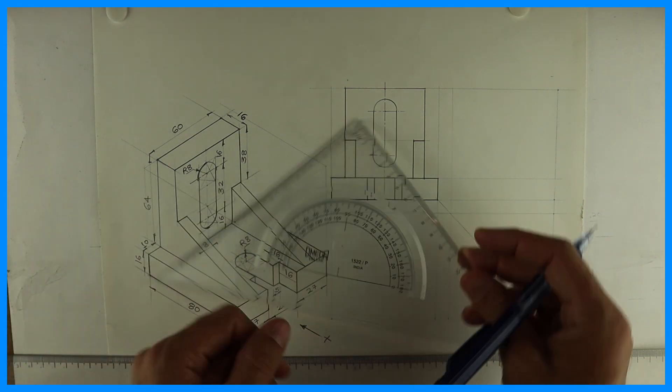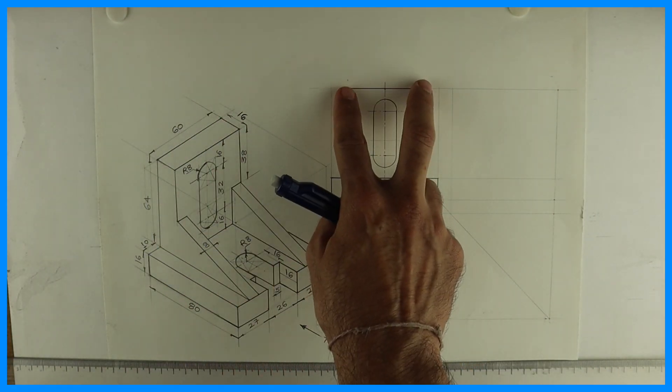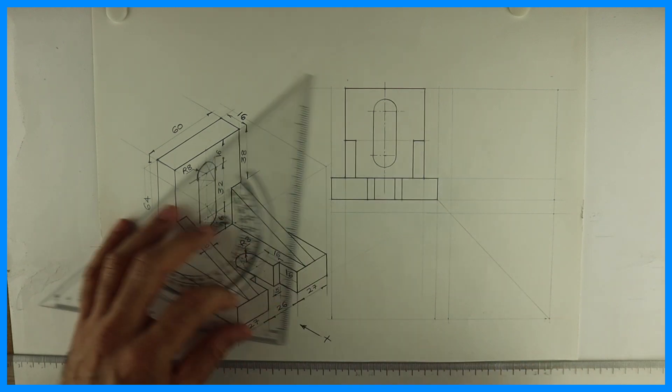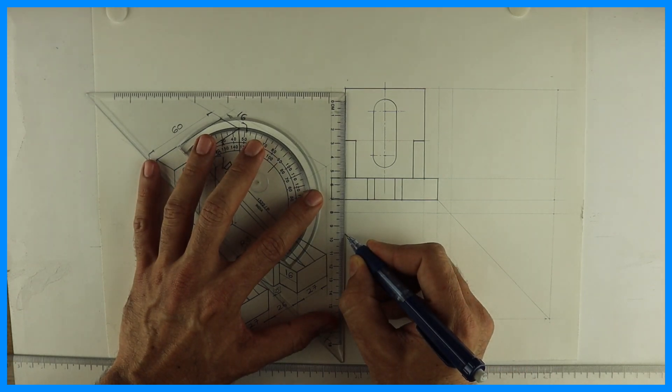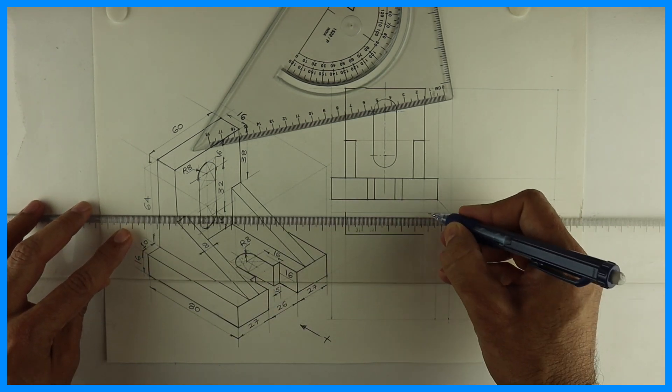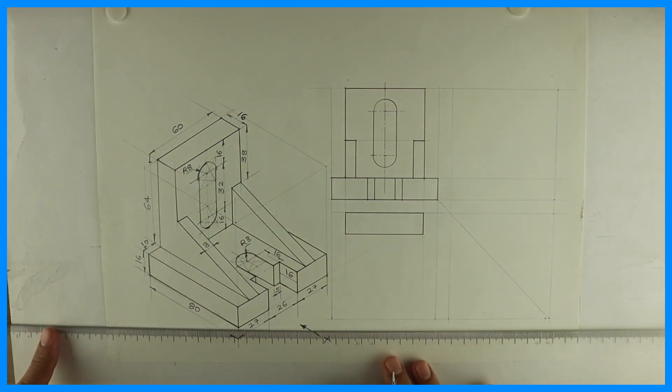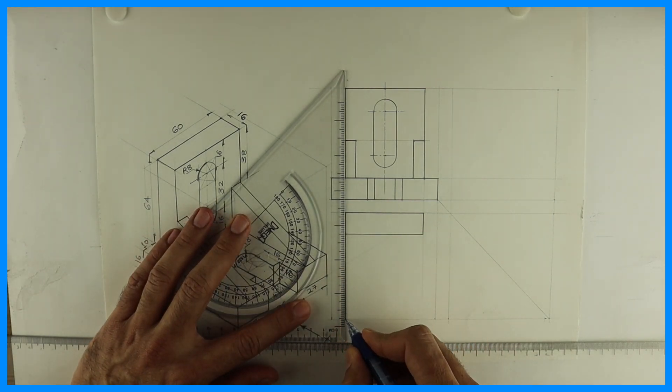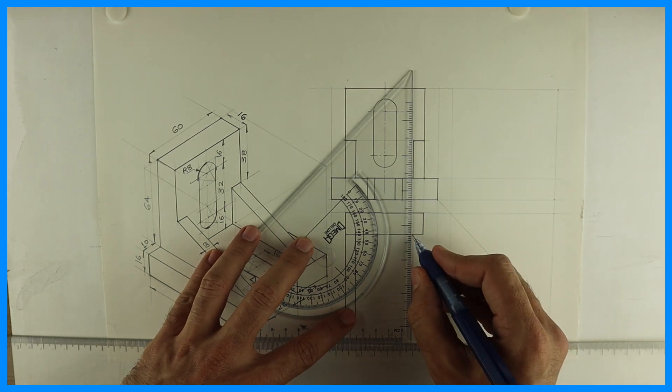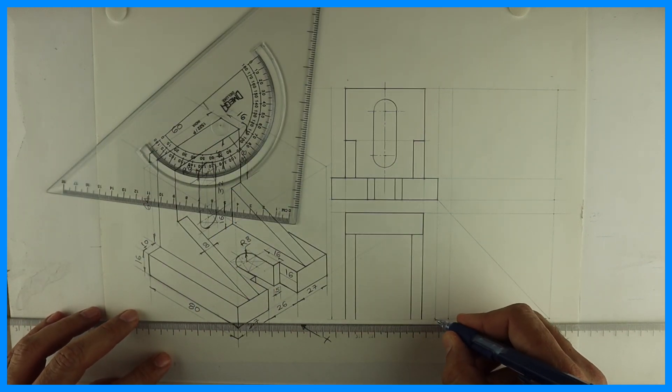Now we'll draw top view. This is also dark. Now I will draw the top view 60 by 16. Then you have, see, extend this line. We are just projecting all these lines from front view, that 8mm line, and this part is dark.